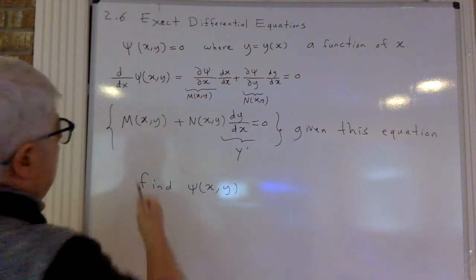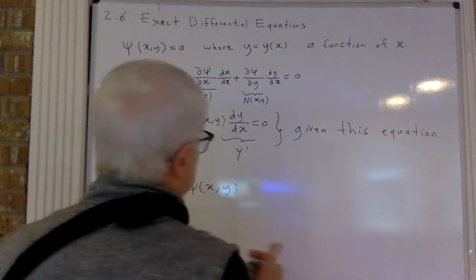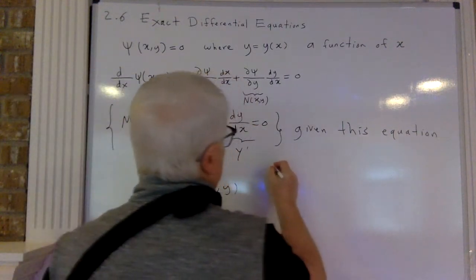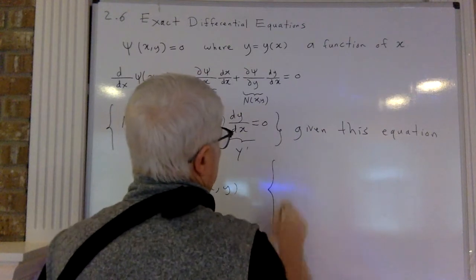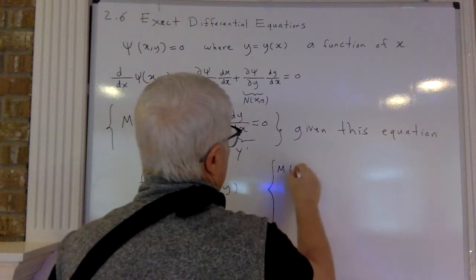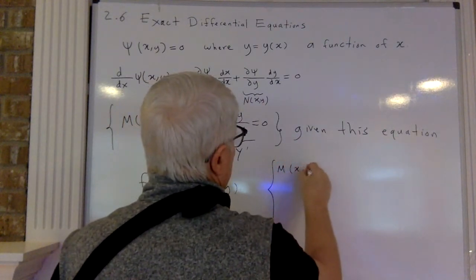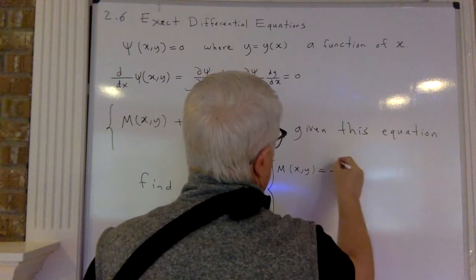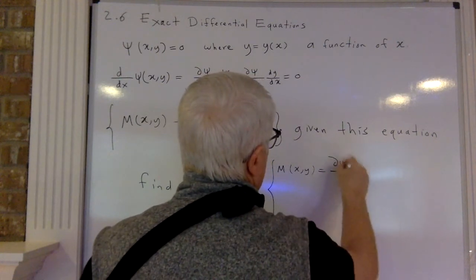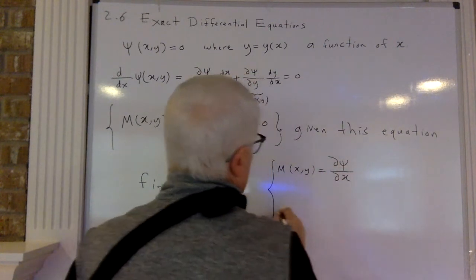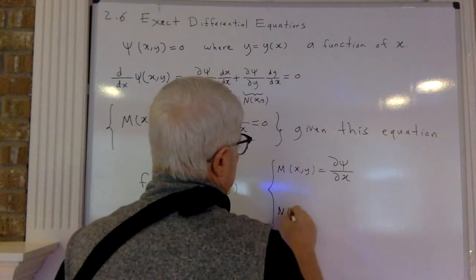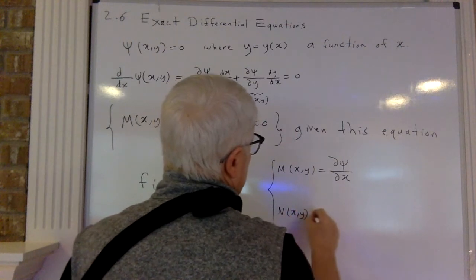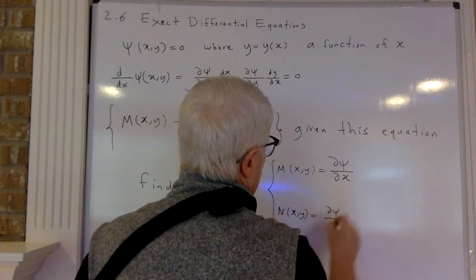But let's look at this and see: if we are given something like this, how do we know it comes from a potential function? Which means, should I even try to solve it, or do I say I cannot solve it using this method? Now let's look at these two: M(x,y) is dc/dx, and N(x,y) is dc/dy.